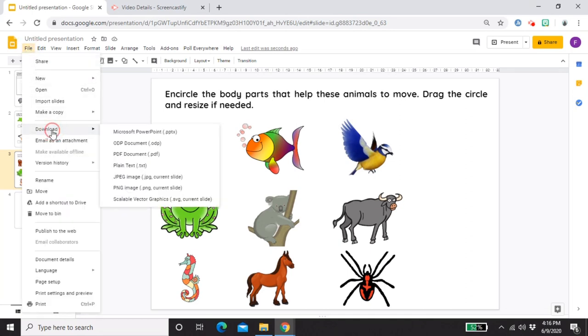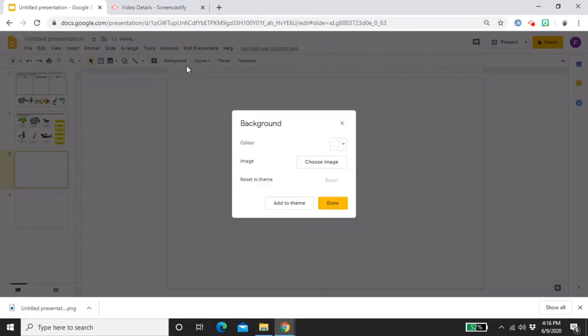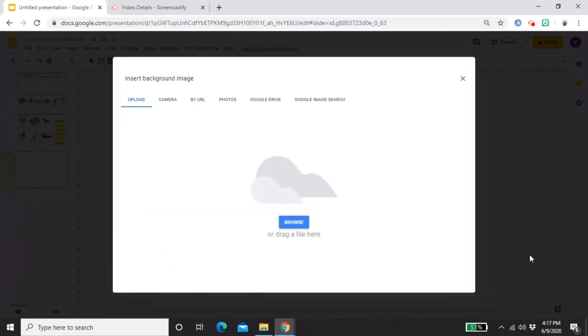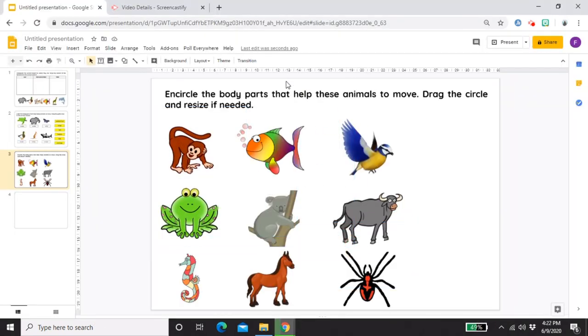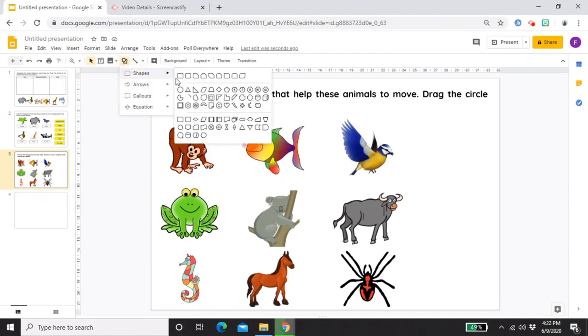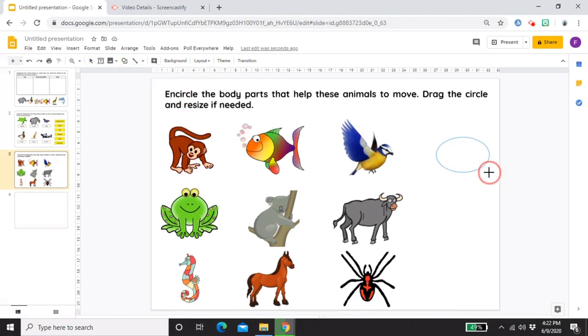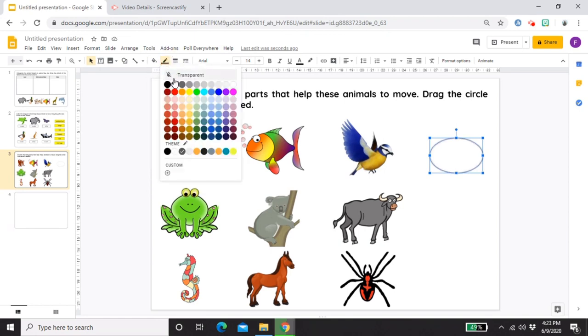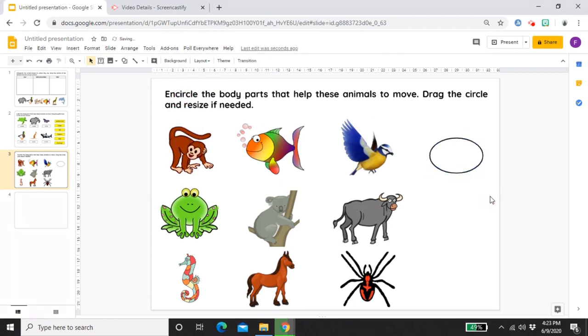I'm done with the parts that students shouldn't move. Next is to save it again. Download PNG. As you can see, it can't be moved by the students anymore. Next is to insert circles. To do that, insert and then shape. Choose a shape, but the easiest is this shape that's already shown. Make sure the fill color is transparent because if we set it to white, it will just cover the body part or animal. The fill color should be transparent and the border should be black, maybe thickness 3.